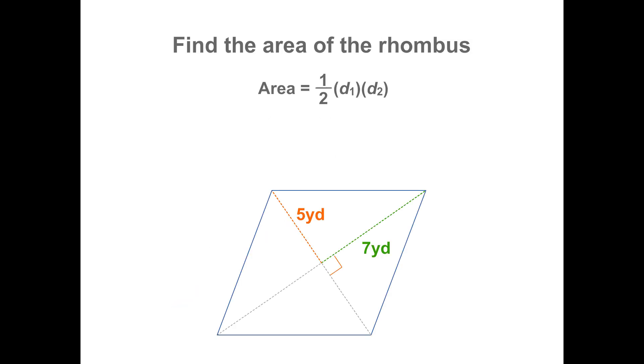To find the area of this rhombus, we must first determine the lengths of the two diagonals. Since the diagonals in a rhombus bisect each other, one must have a length of ten yards, while the other has a length of fourteen yards. The final answer is seventy square yards.